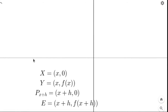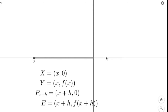Think of this as a coordinate system. This is the x-axis and this is the y-axis — you've studied those before. Any point in this coordinate system has an x-value telling us how far we've gone to the right or left of the origin, and a y-value telling us how far we've gone up or down from the x-axis. The x-value is negative to the left of the origin and positive to the right.